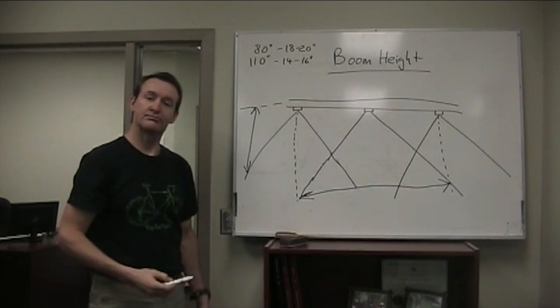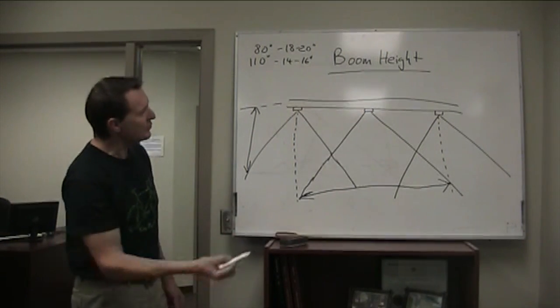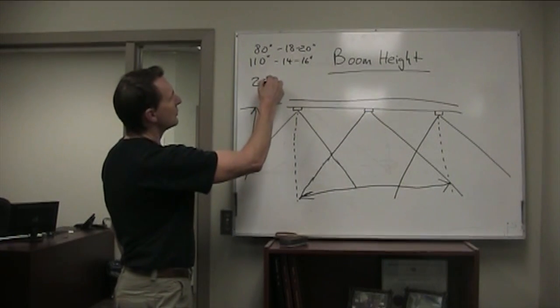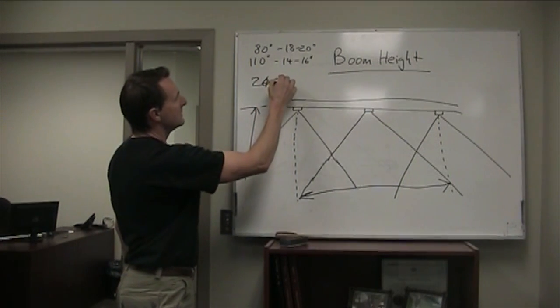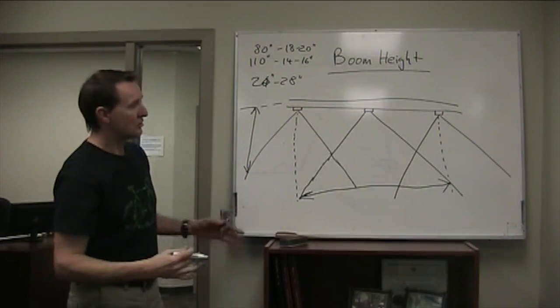It'll drop off a little bit. Set your boom height so that the edge of the fan goes into the middle of the next nozzle and you're done. It doesn't matter what that height is. It probably will be about 24 to 28 inches give or take, depending on the nozzle and the pressure you use.